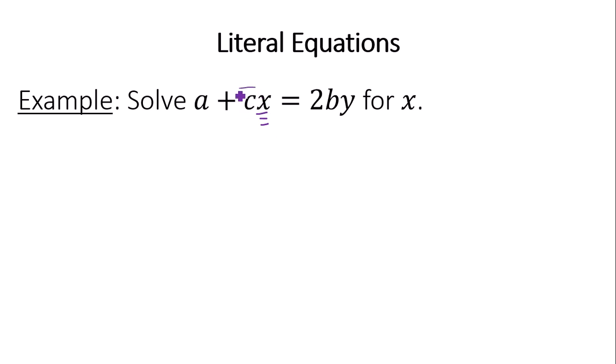That means I need to get the CX term by itself before anything else. So we need to take this positive A here and subtract A from both sides of the equation. We will get CX equals 2BY minus A. Remember the ultimate goal here, we need to get X by itself. Since we're multiplying by C, we will divide both sides by C. You're actually going to get a final answer of X equals 2BY minus A over C. You can keep your answer in this format. That is okay.